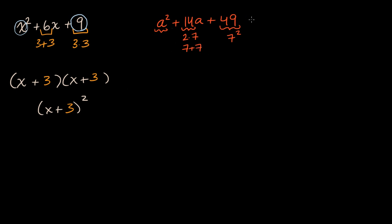So you can immediately say, okay, if I want to factor this, this is going to be a plus seven squared. And you can, of course, verify that by multiplying out, by figuring out what a plus seven squared is.